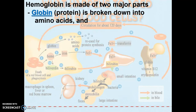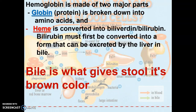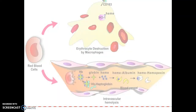Hemoglobin is made of two parts: the globin protein and the heme group. When broken down, heme is converted to bilirubin, which must be processed in the liver to make bile. If you have liver damage and bilirubin isn't being converted, it will taint your skin yellow — they look at the whites of your eyes to see if they're yellowing, which tells you if you're jaundiced. Bile is what gives stool its brown color.